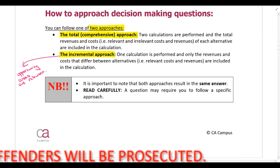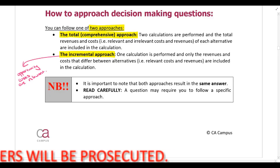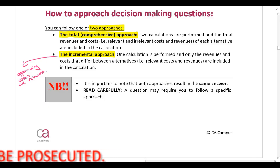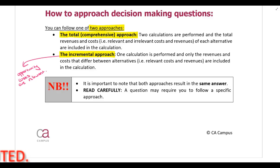On the next couple of pages we're going to work through various different types of decisions that companies need to make. I'm going to show you the calculations using both approaches — the total approach and the incremental approach — and you'll see that regardless of the approach we use, we get exactly the same answer. However, read questions carefully, because you might be told to use a specific approach.